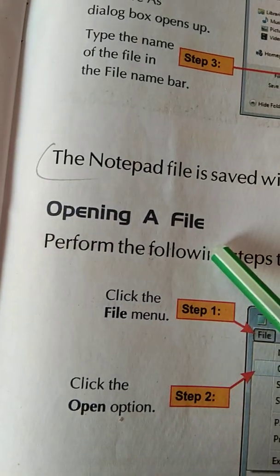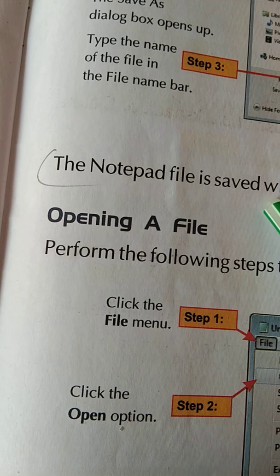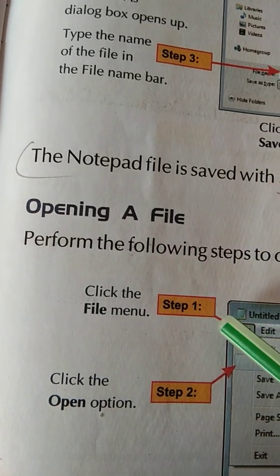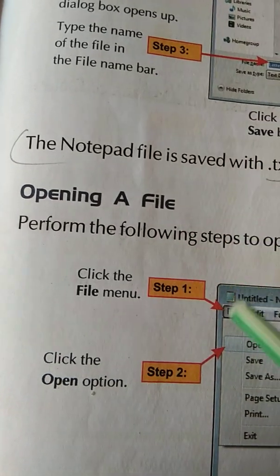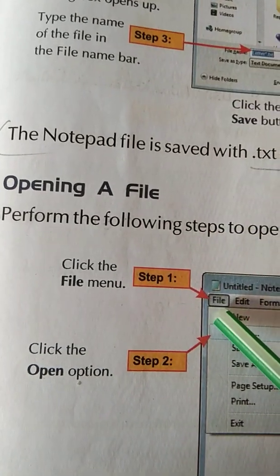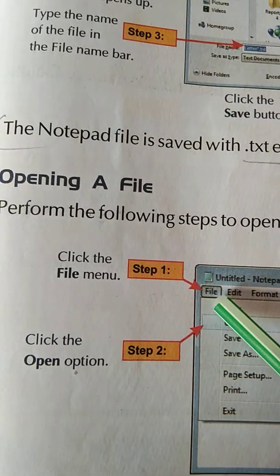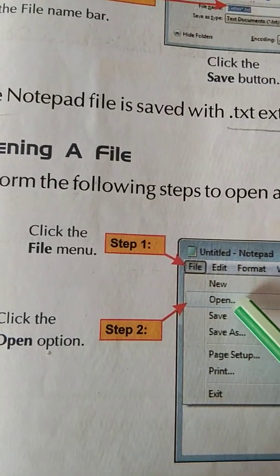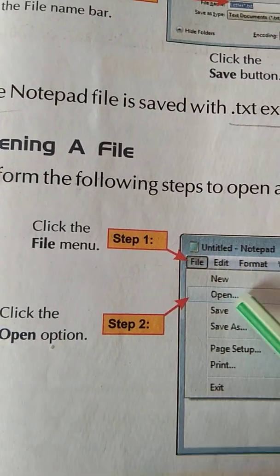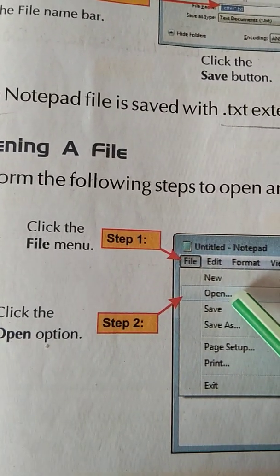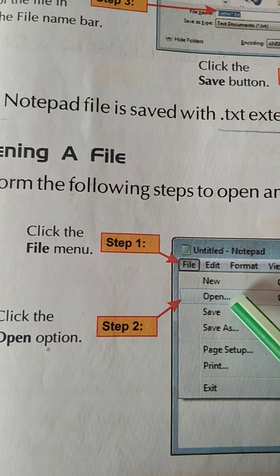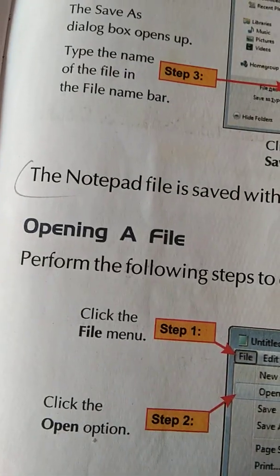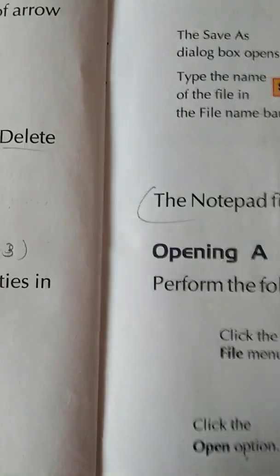Now, opening a file. Once you have saved your file, how do you open it? Simple — go to the file menu, and here is the second option: Open. So you will open your saved file.